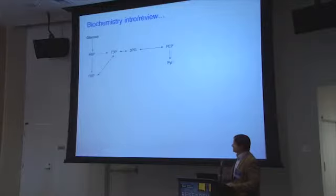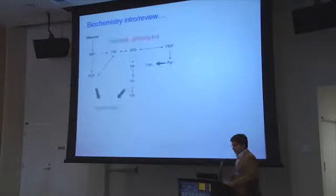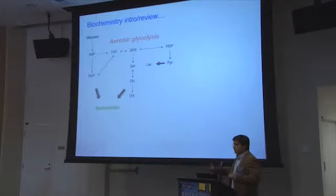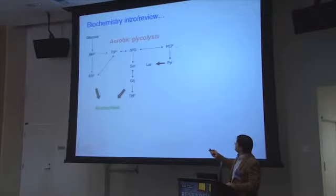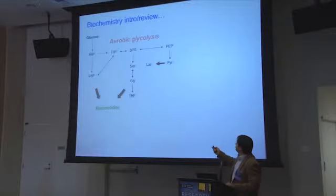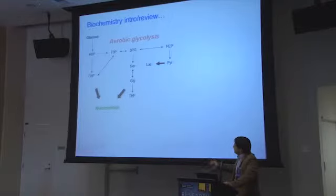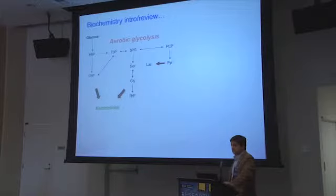In glycolysis, glucose is cleaved to two pyruvate molecules. What Warburg showed is that if you're working really hard, you'll use anaerobic glycolysis. What Warburg showed is that tumors, even in the presence of adequate oxygen, will undergo aerobic glycolysis and divert much of this pyruvate to lactic acid. We think this occurs to enhance the synthesis of nucleotides and DNA.